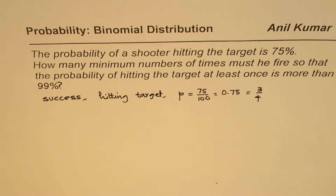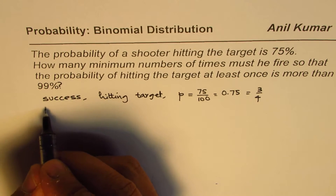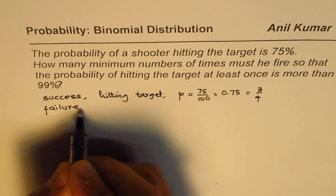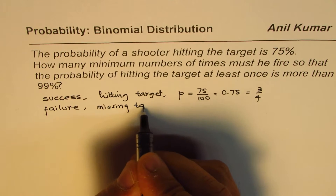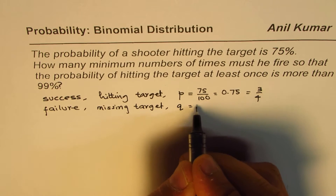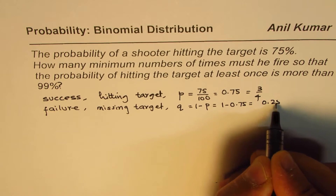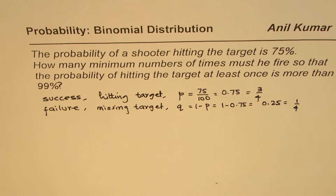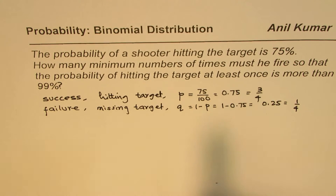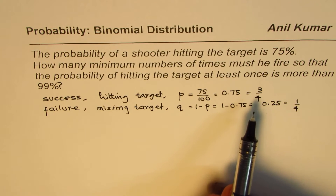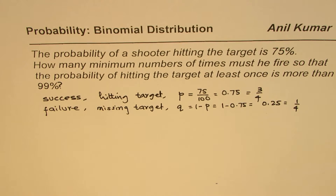We'll assume this to be a Bernoulli's trial, which means we have only two outcomes: success or failure. Failure will be missing the target, written as lowercase q, and q equals 1 minus p, which is 1 minus 0.75, giving us 0.25 or 1 over 4. We also assume that this probability remains constant and every event is an independent event, so we're talking about a binomial distribution.